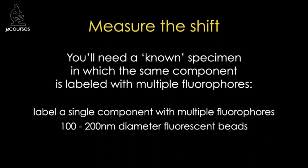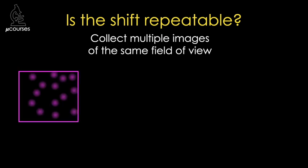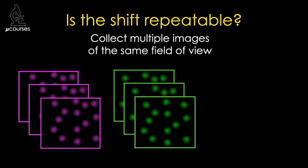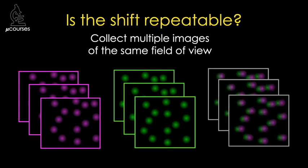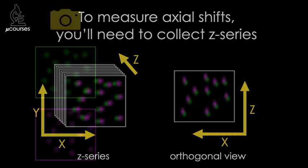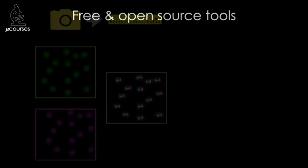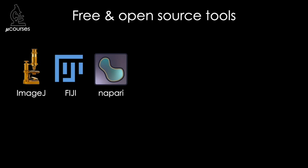Alternatively, you can purchase small beads that fluoresce in multiple wavelengths. To measure the shift, you'll take images of the test sample at each wavelength that you plan to use for your experiment. For the shift correction to work, the shift must be repeatable. To determine if it is, you'll need to take multiple images of the same field of view going back and forth between wavelengths — this will reveal if the shift is repeatable. You can use the same sample to measure axial chromatic shifts, which requires collecting multiple Z-series of the same field of view so you can measure the shift in the orthogonal view. After you've collected images of the shift, you'll need to measure it using free and open source analysis software such as ImageJ, Fiji, and Napari.